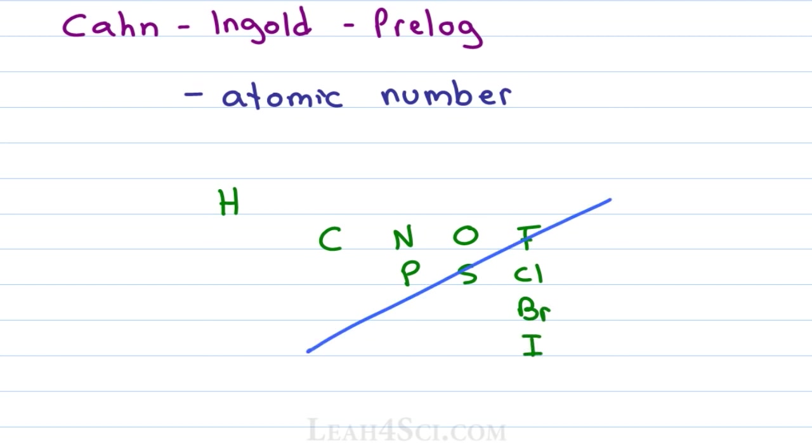Why is this important? We have electronegativity going up towards the right, size going down to the left which is great for reactions but here's another reason to know them. This is the order that we're going to use to rank these atoms.